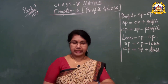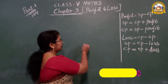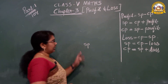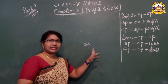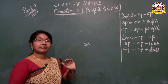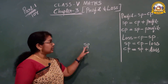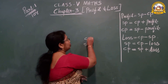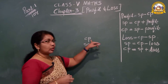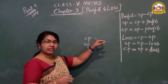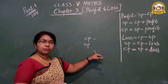Now this is page number 108. You know what this short form is — SP — that is Selling Price. What is it? Selling Price. Then CP — that is called Cost Price. What is the full form of CP? Cost Price. What is the full form of SP? Selling Price.